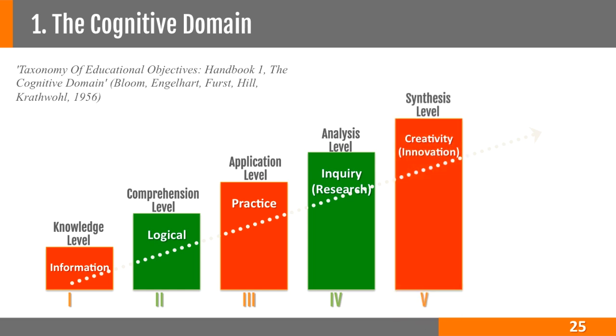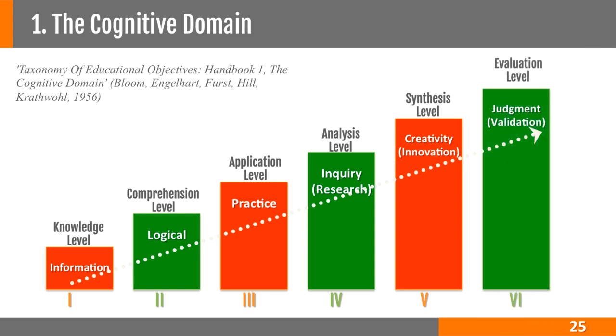The fifth level is synthesis, creativity or creating new ideas based on the existing understanding, application, and analysis of the subject matter. The sixth and final level is evaluation level, that is the ability to assess or evaluate the relative merits and validity of the information or idea or between two or three things. I'd like to now provide a few examples to clarify how these different elements of this taxonomy can be interpreted.